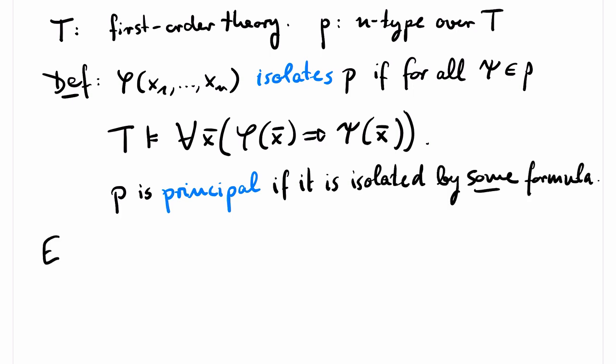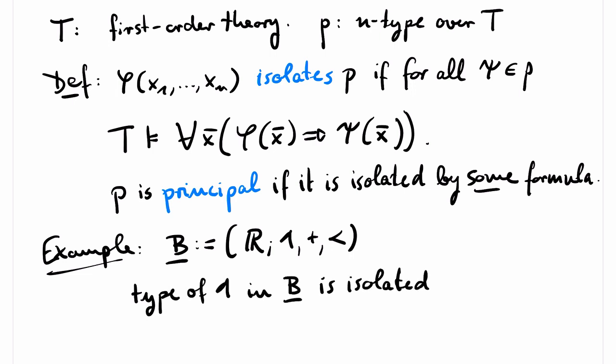Let's have a look at an example. Let B be the structure whose domain are the real numbers, and which has the constant 1, the binary addition operation, and the order.